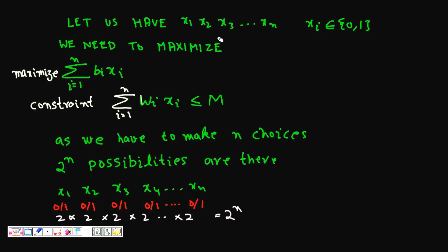We want to formulate it in terms of a mathematical model. Let's have variables x1, x2, x3 till xn, where each xi is either zero or one. If xi is equal to zero, we don't put item i in the knapsack. If it is equal to one, we put it in our knapsack. Now you have to basically maximize bi·xi, the benefit times its presence.